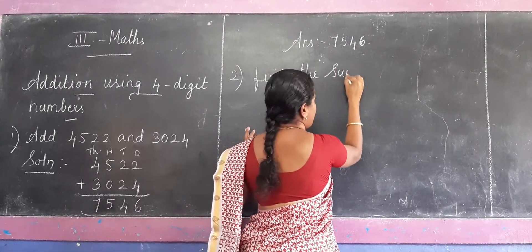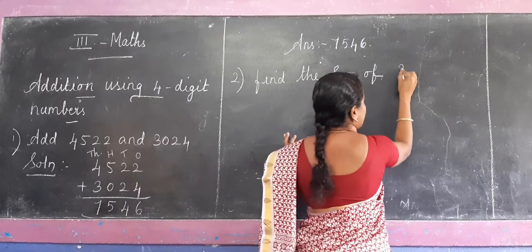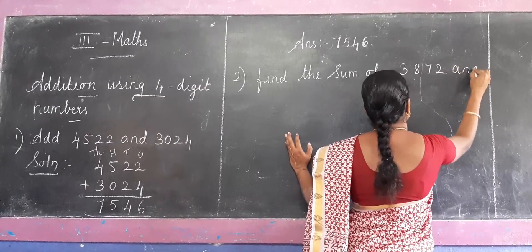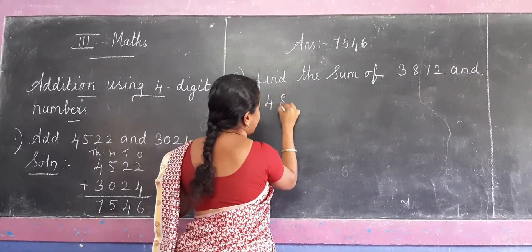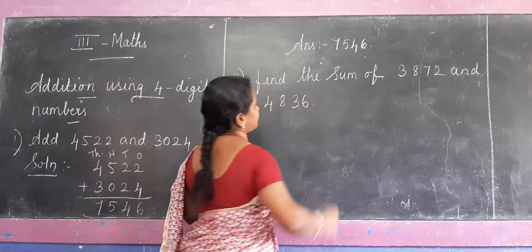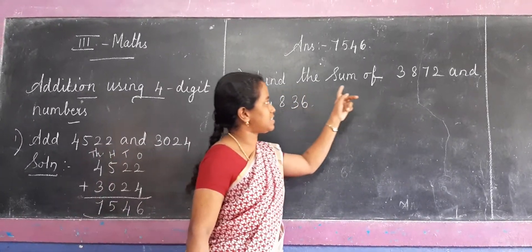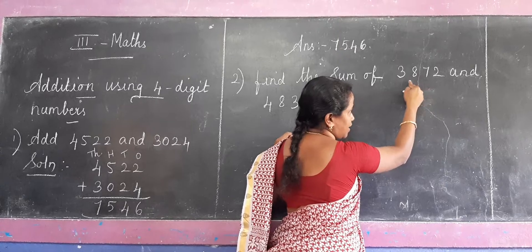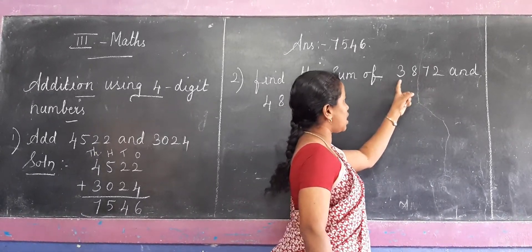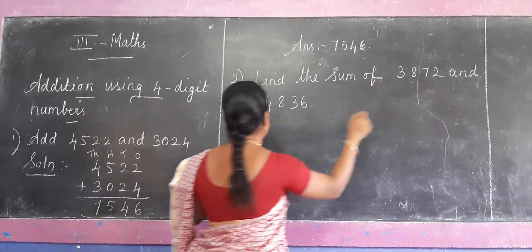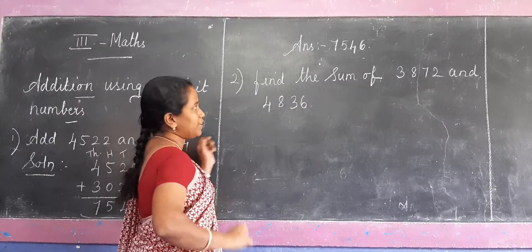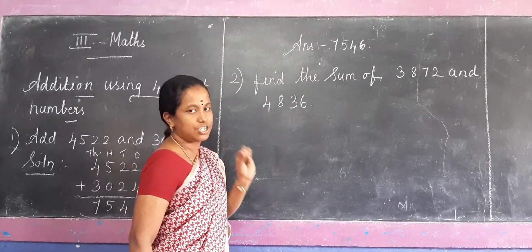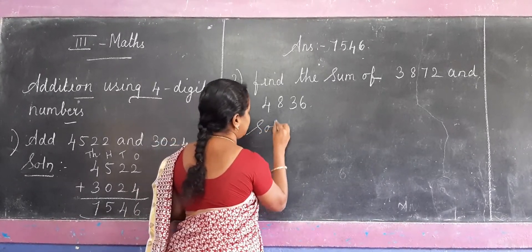Second, find the sum of 3872 and 4836. Second question, find the sum of 3000 place on 1, 100, thousand. So how to pronounce: 3,872 and 4,836. Now, question, how to get sum of? Sum means add.